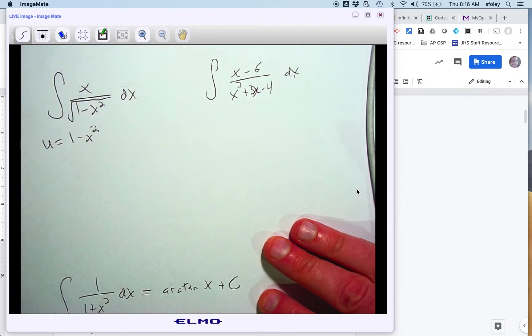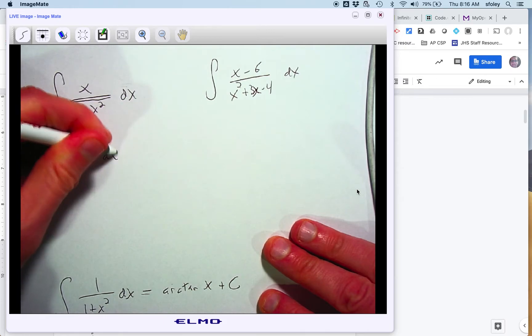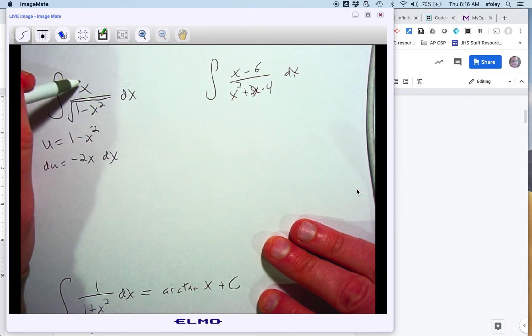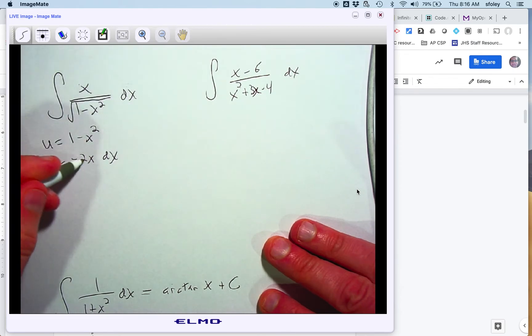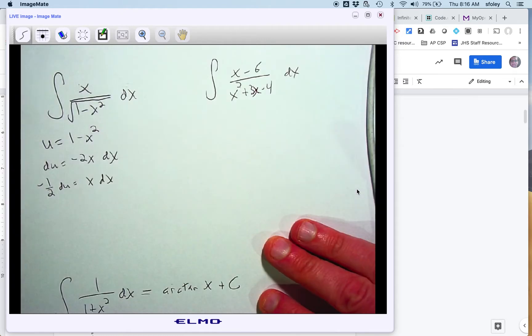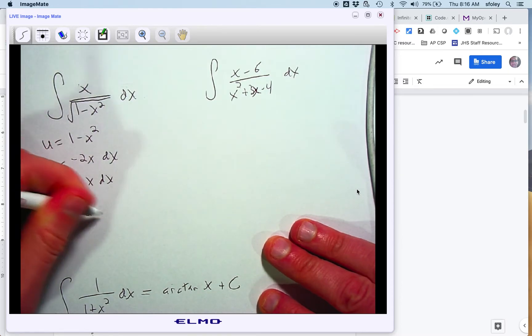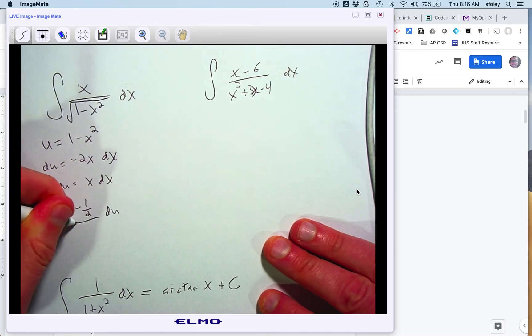So I let u be that inside of the more complicated part. Du then is negative 2x dx, and then I see an x dx up here, so I need to get rid of that negative 2 by dividing. I can now rewrite the original integral, that x dx becomes negative 1 half du, and then the bottom is now square root of u.